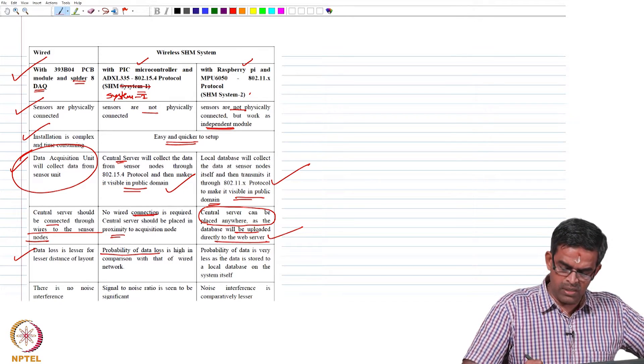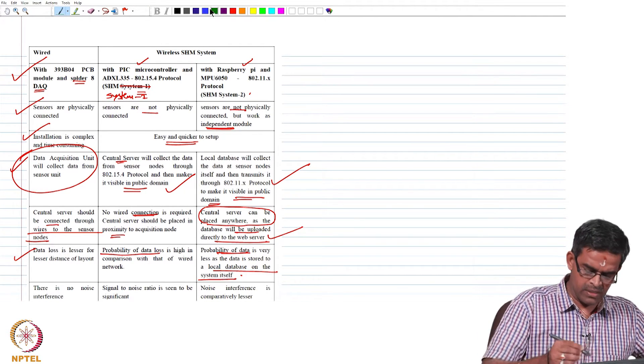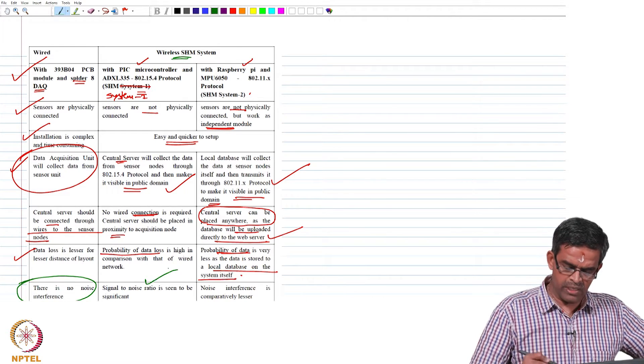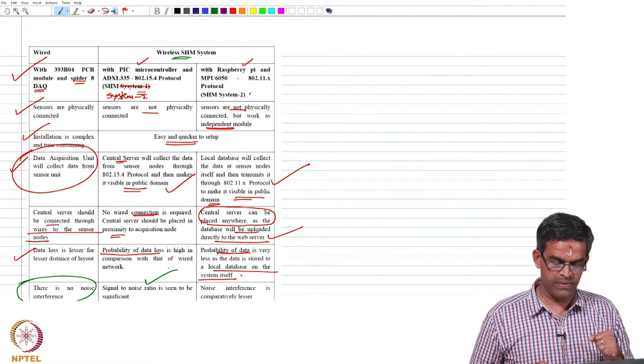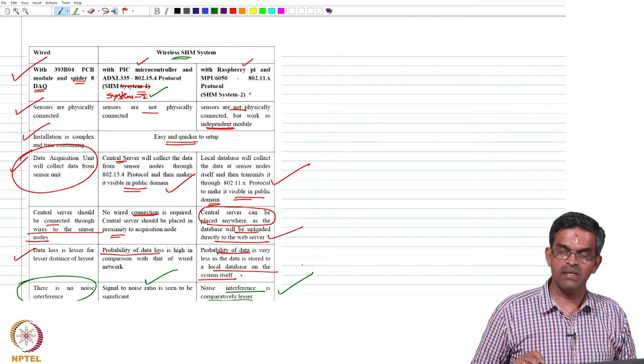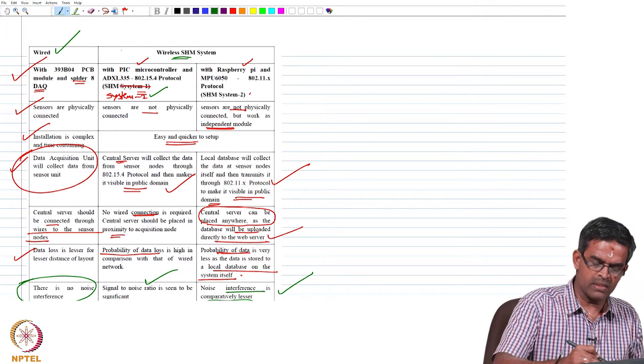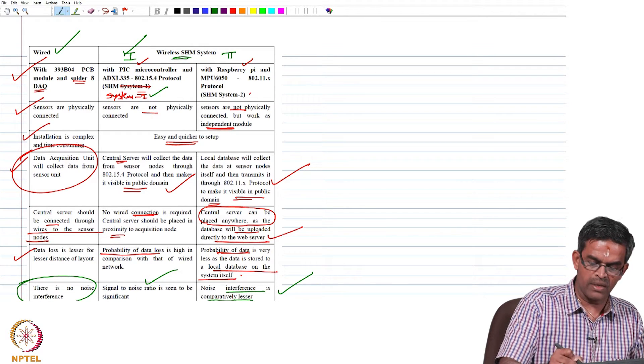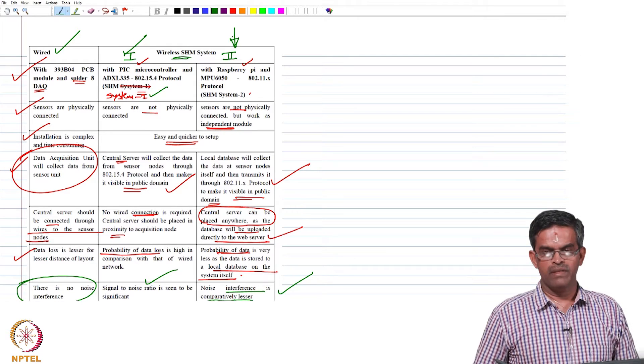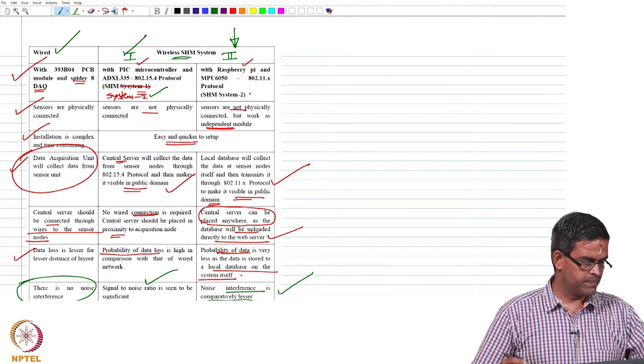However, in system 2 this is greatly reduced by having a local database on the system itself. In wired sensor, the greatest advantage is there is no noise interference, whereas in wireless sensors signal to noise ratio seems to be very high because we generated white noise in case of system 1 design. But in system 2 design, the noise interference is comparatively lesser. This table shows very clearly the comparison between three systems: wired system, SHM design 1, and design 2, out of which the wireless system design 2 recommended for experimental investigating BLSRP under wave loads in the lab scale has been very successful.